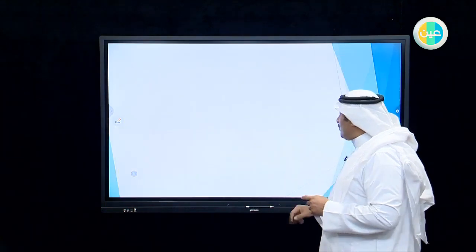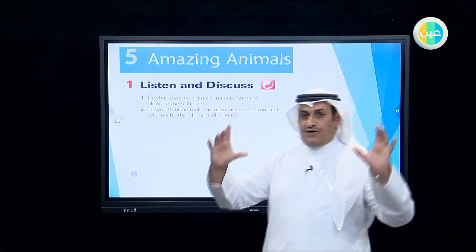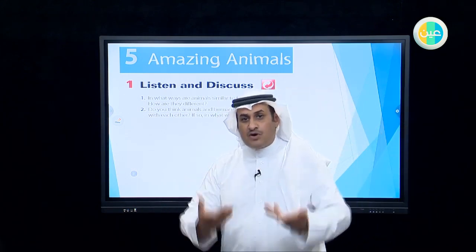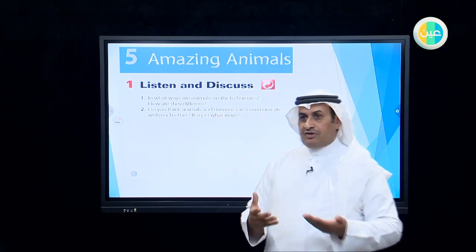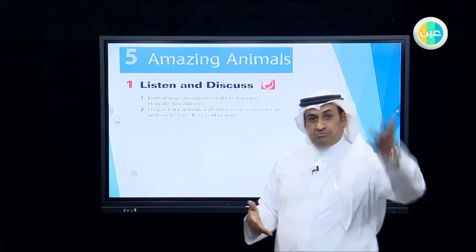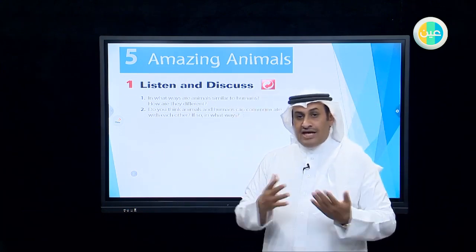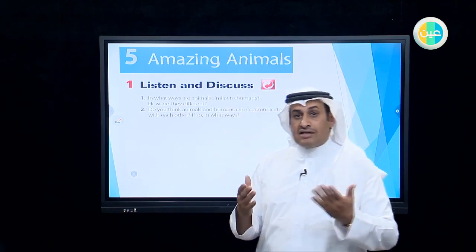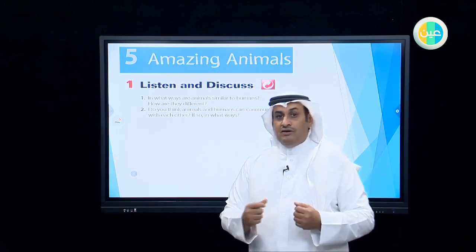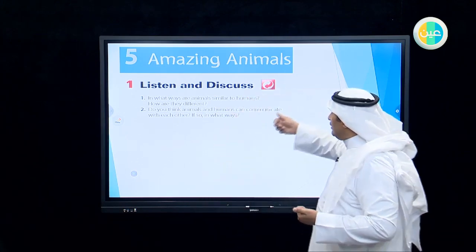Just follow me and open your books on pages 68 and 69. The title of this unit is Amazing Animals. Amazing animals means abnormal or unusual animals — for example, wild animals like lion, tiger, cheetah, chimpanzee, monkey, elephant, whatever kind of animal you want. That means animals that you cannot imagine or don't believe could be friendly with human beings. This is what our title is talking about.